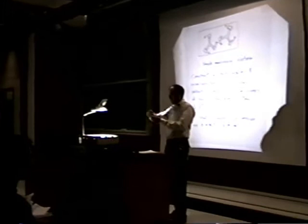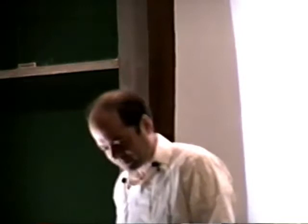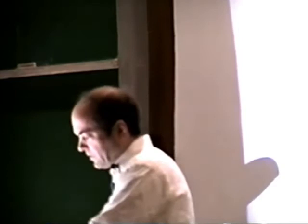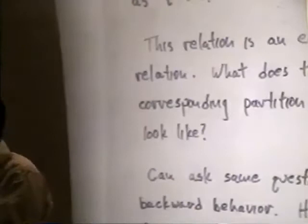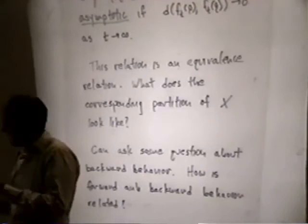If you start the system in some particular initial position, how does the behavior develop with time? We want to know what behaviors are possible for points under this flow F sub t. It's useful to say when two points behave in the same way. Let's say that two points are forward asymptotic if the paths in phase space get closer and closer together as t goes to infinity.